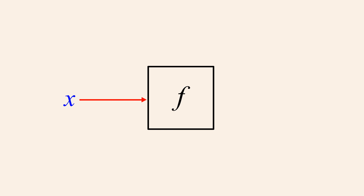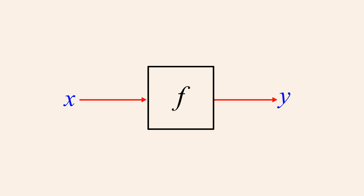We saw that with real-valued functions of a real variable, x is typically used as the input variable, also called the independent variable. If we call the function f, the function's output value is symbolized by the notation f. When the independent variable is x, the output value is usually assigned to the variable y, called the dependent variable.